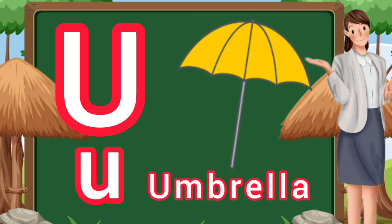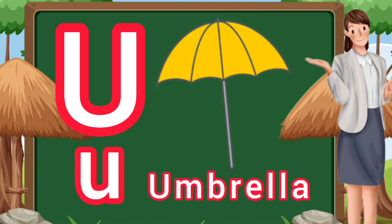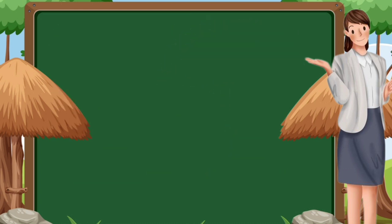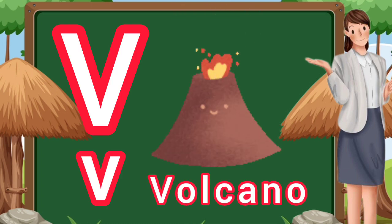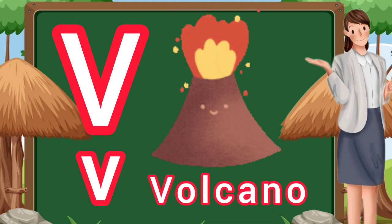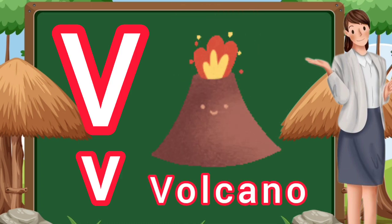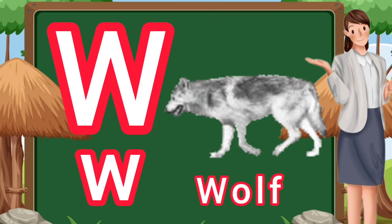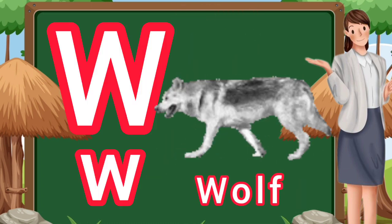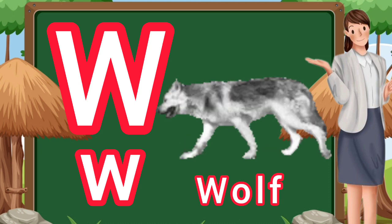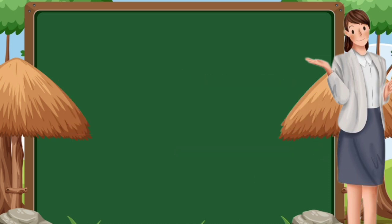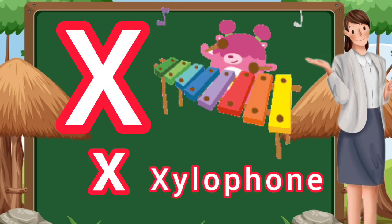U. U for umbrella. V. V for volcano. W. W for wolf. X. X for xylophone.